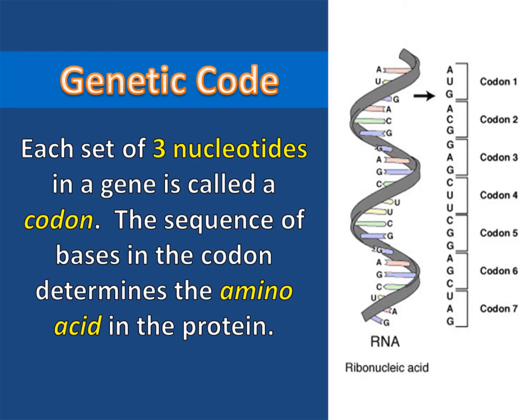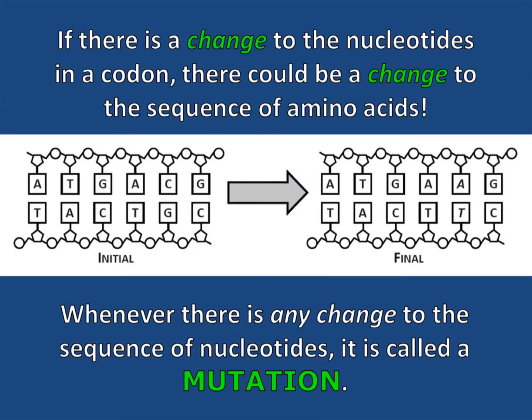Each set of three nucleotides in a gene is called a codon. The sequence of bases in the codon determines the amino acid in the protein. If there is a change to the nucleotides in a codon, there could be a change to the sequence of amino acids. Whenever there is any change to the sequence of nucleotides, it's called a mutation.